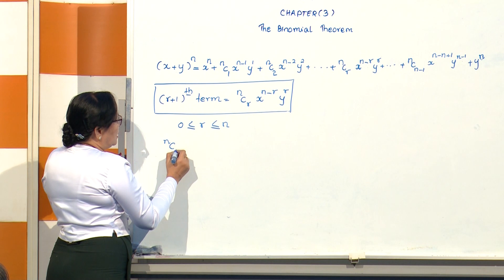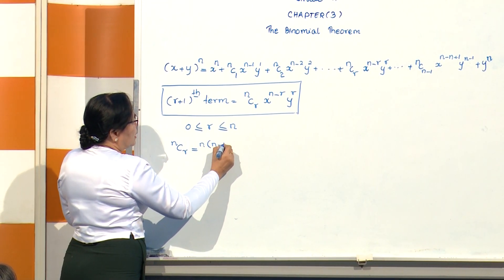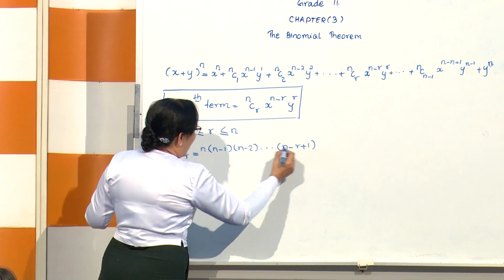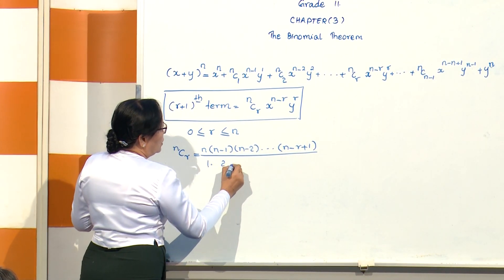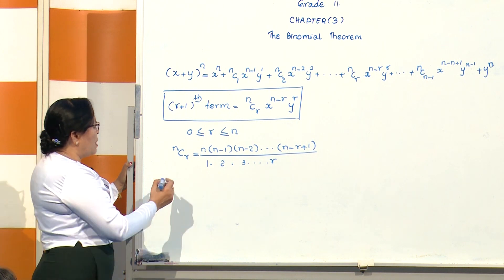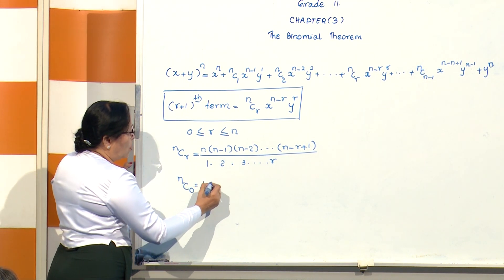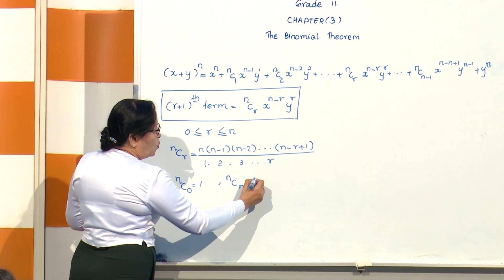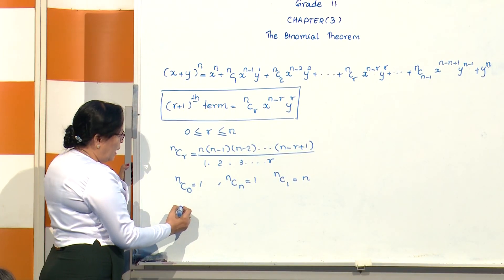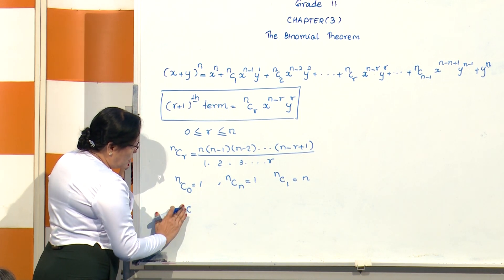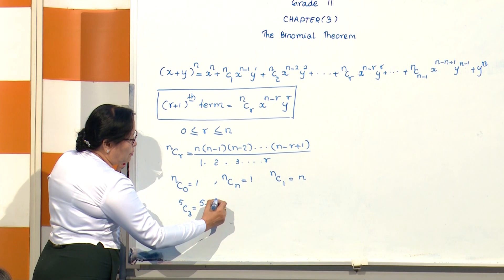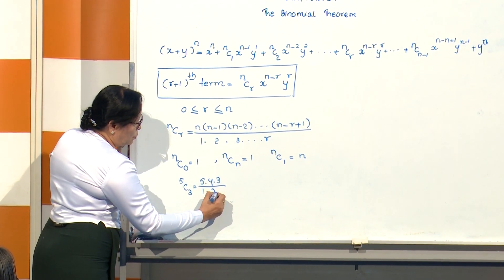Now, nCr equals n times (n-1) times (n-2) ... times (n-r+1), divided by 1 times 2 times 3 ... times r. For example, 5C3 equals 5 times 4 times 3, divided by 1 times 2 times 3.